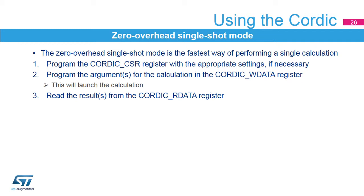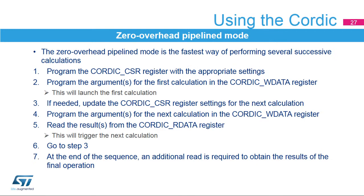The sequence described in this slide summarizes the use of the Cordic IP in zero overhead mode assuming a single-shot operation — no further calculation is scheduled, so the processor simply waits for the completion of the current operation. A further slide summarizes the use of the Cordic IP in zero overhead mode assuming pipeline operations. By iterating steps three to six, software can re-execute the same operation for an array of arguments. The seventh step is required to obtain the result of the last operation.